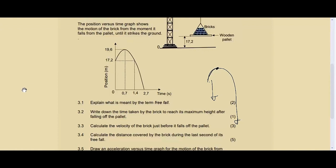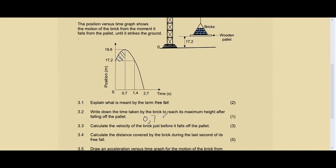Question 3.2 says: write down the time taken by the brick to reach its maximum height after falling off the pallet. We've established that the brick jumps and reaches a maximum height. From the graph, it takes 0.7 seconds. Since the question says 'write down,' the answer is simply read off the diagram — 0.7 seconds.